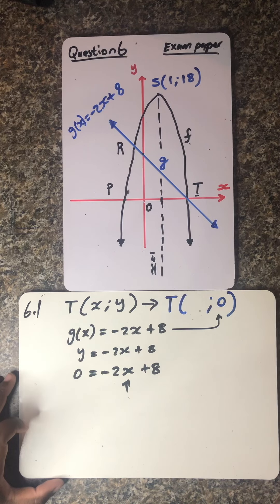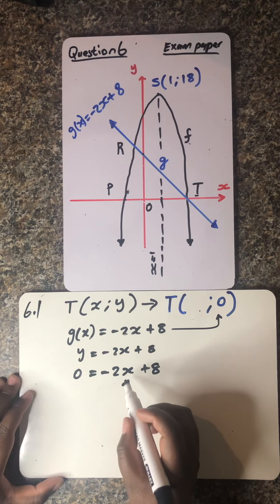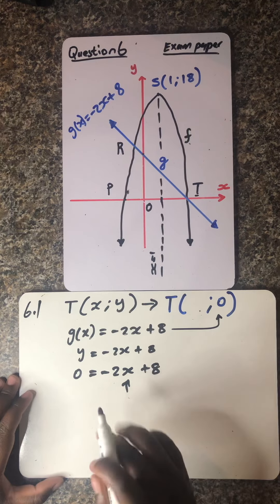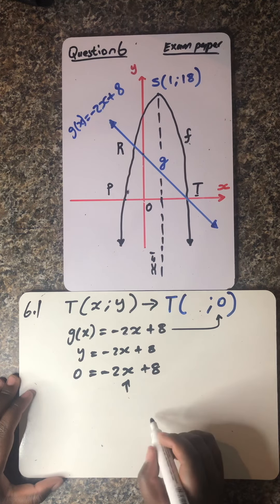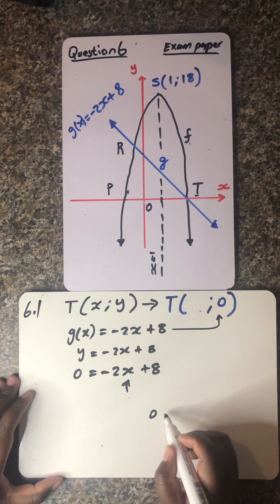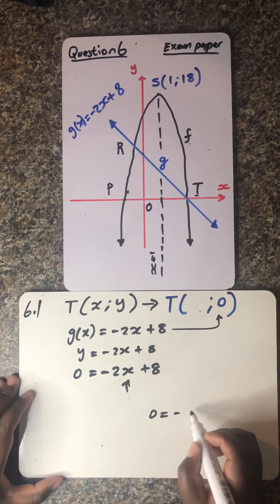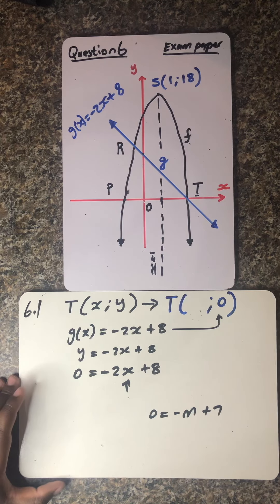So ladies and gentlemen, obviously because we don't know the value of x, that means we need to now solve for x. There's something I want you to notice. Let's say 0 is equals to negative m plus 7, just as an example.